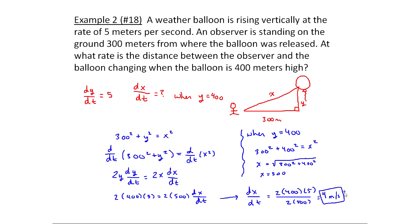So let's look back at what this actually means. This is telling me that at the very moment when the balloon is 400 meters high, at that very instant, this distance right here is increasing by 4 meters every second. And at that very instant, this distance right here is increasing at 5 meters per second. That's a snapshot in time.